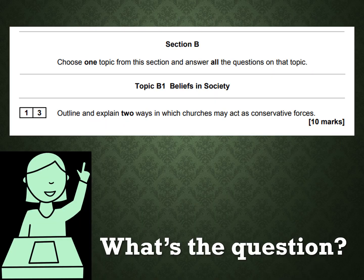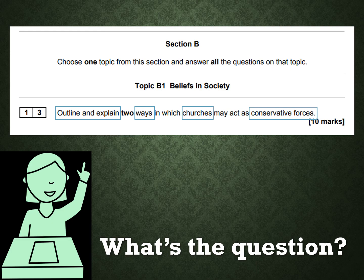Here is the question we are looking at today. We're going to break this down: firstly, 'outline and explain' means that you need to identify and explain. In this case it is the way — another word for a way is the steps, the processes of how something occurs. We are linking two parts of the specification together: churches, which is part of your religious organisations, and the features of how they may act as a conservative force — maintaining society in a certain way, preserving the status quo. You could be referencing sociological theories when answering this question.